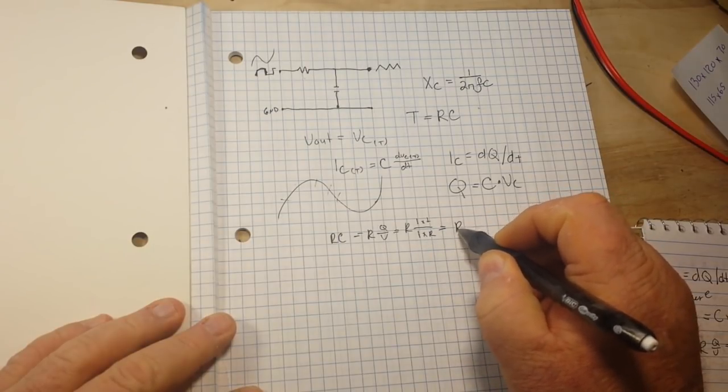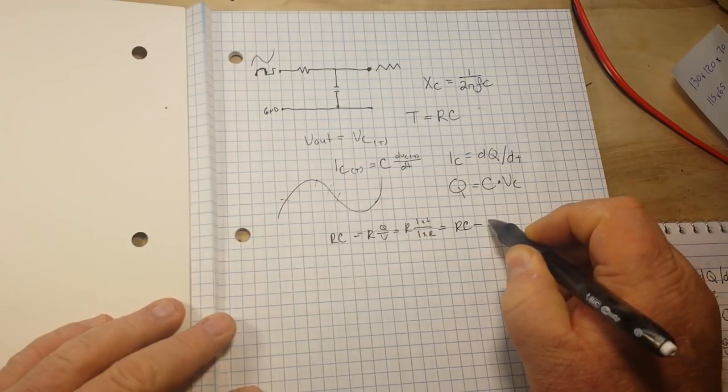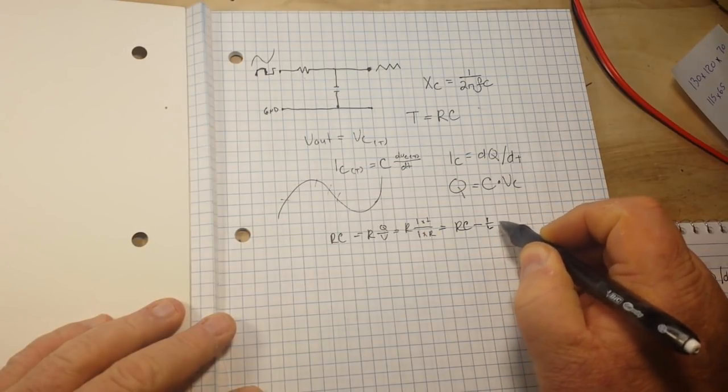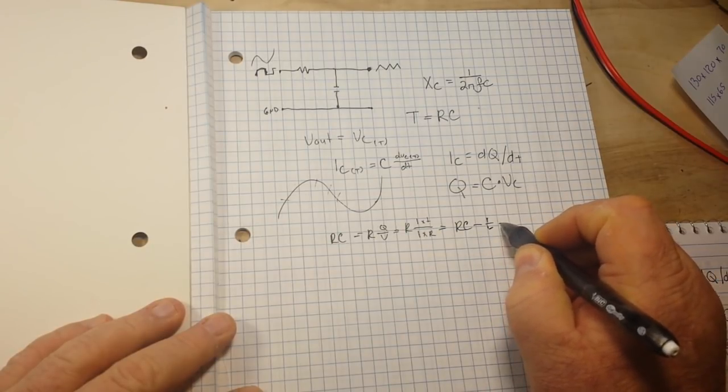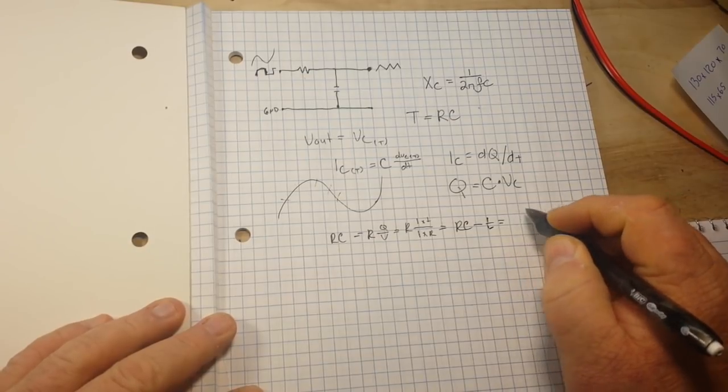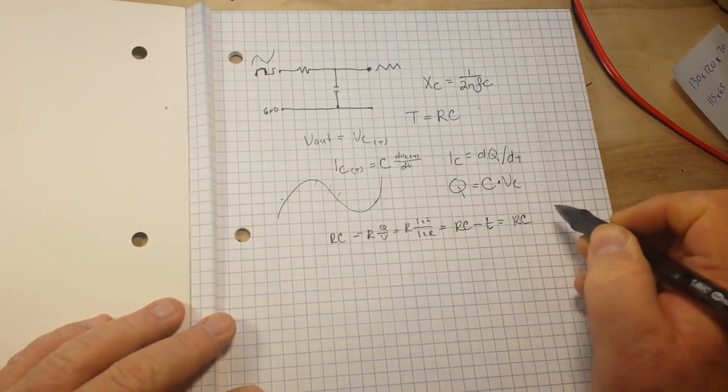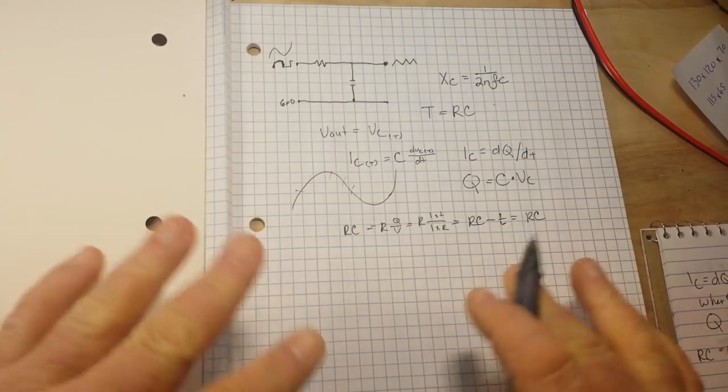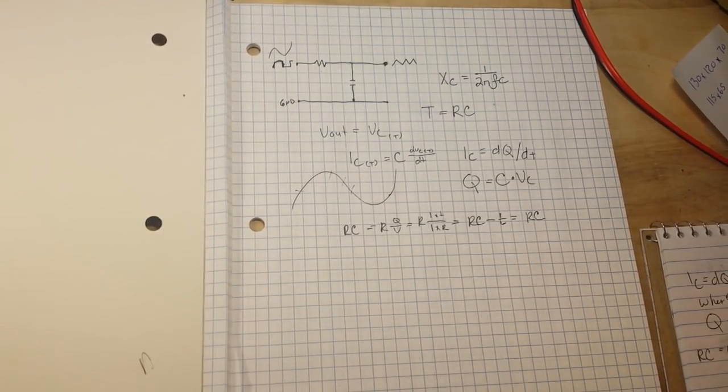So our RC time constant, or T, is simply equal to R times c. Just a breakdown of everything so you can see how they all work together.